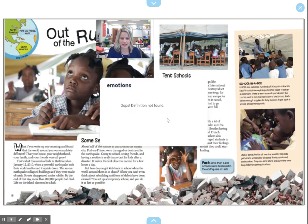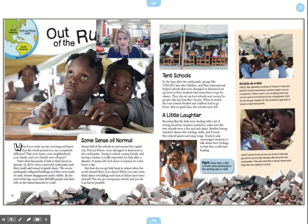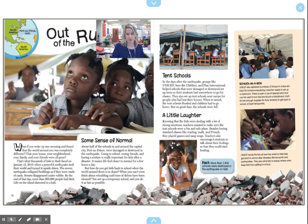Let's keep reading. We're going to read this paragraph called 'A Little Laughter.' Knowing that the kids were dealing with a lot of strong emotions, teachers wanted to make sure the tent schools were a fun and safe place. Besides having standard classes like reading, math, and French, they played games and sang songs. Teachers also encouraged students to talk about their feelings so that they could start healing. So what is this paragraph mostly about? It's about why tent schools are important. Why is this school important to Haiti? It's a fun and safe place for kids to go — they're able to keep learning and have fun, and they can share their feelings about the earthquake.